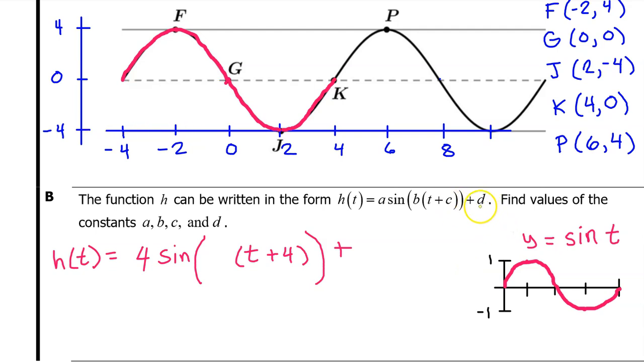The value of D corresponds to a vertical translation. Notice that the parent function has a midline at zero. H of T also happens to have a midline at zero. So there is no vertical translation. Or we could say the vertical translation is zero, and that is the value of D. Normally, we don't write it when it's a zero, but we're going to write it this time, because the whole point is to find the values of A, B, C, and D. So we want to explicitly show that the value of D is zero. So let's move on to finding the value of B.